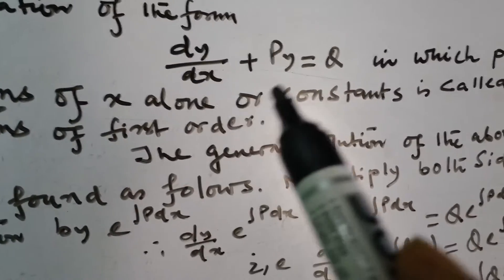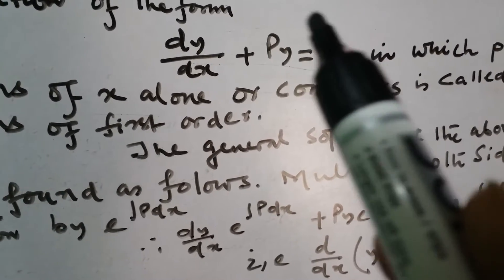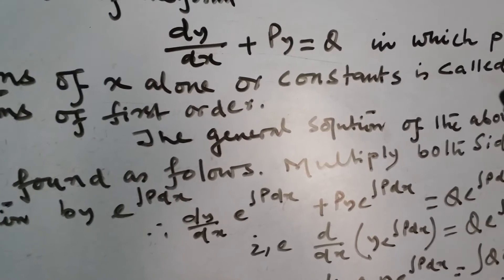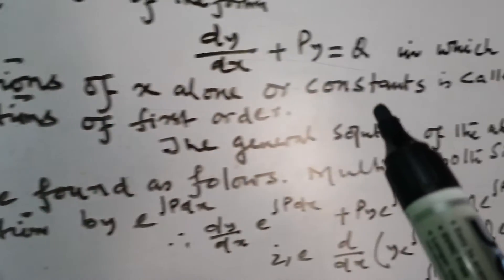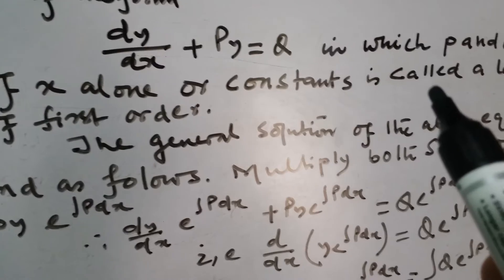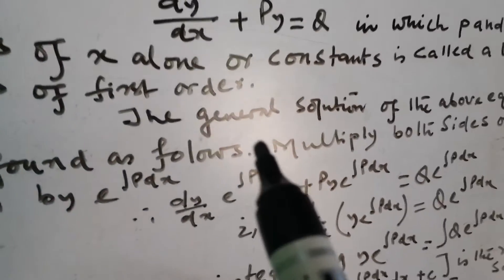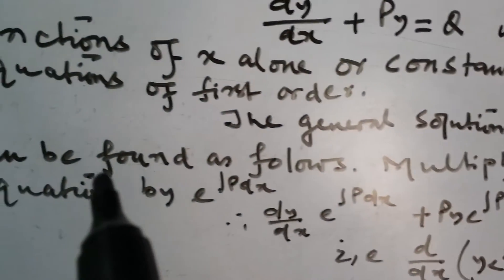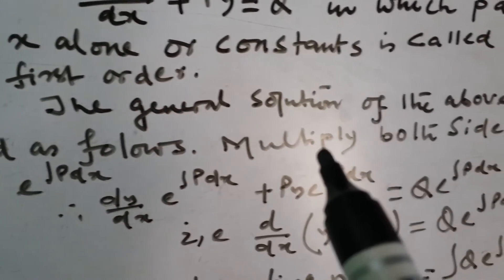In this form, where p and q are functions of x alone or constants, is called the linear equation of first order. The general solution of the above equation can be found as follows.